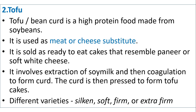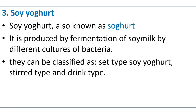Tofu is available in different varieties: silken, soft, firm or extra firm. Soy yogurt, also known as Soghurt, is produced by fermentation of soy milk by different cultures of bacteria. Soy yogurt can be classified as set-type, stir-type and drink-type.